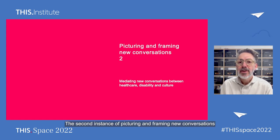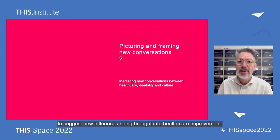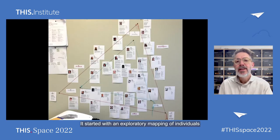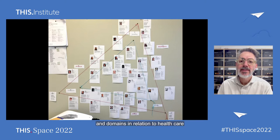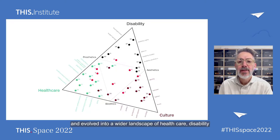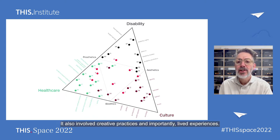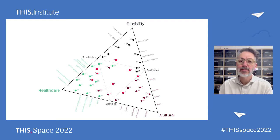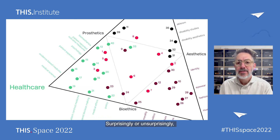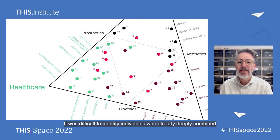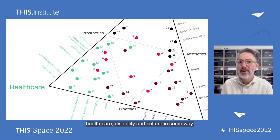The second instance of picturing and framing new conversations involves using visual methods to suggest new influences being brought into healthcare improvement. It started with an exploratory mapping of individuals and domains in relation to healthcare and evolved into a wider landscape of healthcare, disability, and culture — not just academic disciplines, but also creative practices and, importantly, lived experiences. Surprisingly, or unsurprisingly, the middle of the map was quite empty. It was difficult to identify individuals who already deeply combined healthcare, disability, and culture — I consider Tom to be a notable exception.